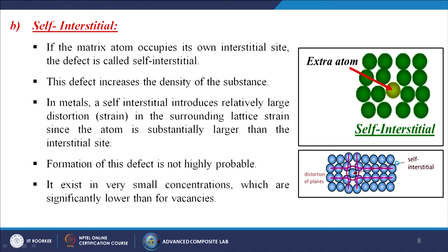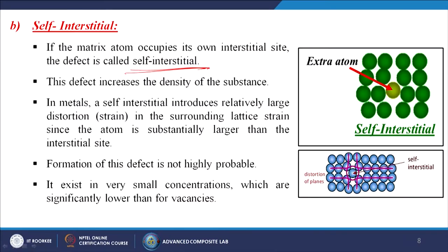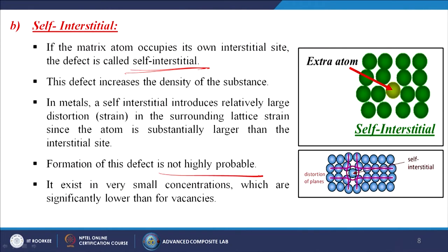Self-interstitial occurs when a matrix atom occupies its own interstitial site — created by the host atom itself. This defect increases the density of the substance. In metals, a self-interstitial introduces relatively large distortions in the surrounding lattice since the atom is substantially larger than the interstitial site. Formation of this defect is not highly probable; it exists in very small concentrations, significantly lower than for vacancies.